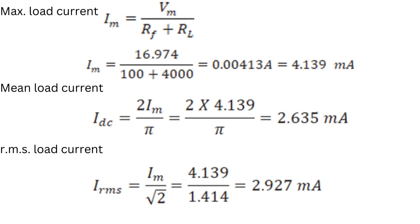To find maximum load current: Im = Vm / (Rf + RL). Since one diode is always in conduction mode, Im = Vm / (Rf + RL) = 169.7 / (100 + 4000) = 4.139 mA. Mean load current Idc = 2Im / π = 2 × 4.139 / π = 2.635 milli amperes.